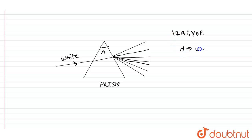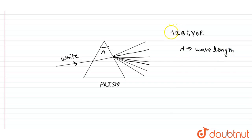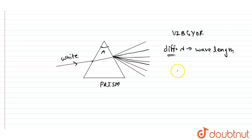You can see that the different colors have different lambda, which is known as wavelength. The wavelength of the colors of VIBGYOR — V (violet) has the least wavelength, and R (red) has the maximum wavelength. So they all have different wavelengths.